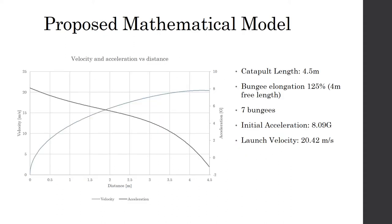The new proposed mathematical model which incorporates the estimated losses and using the parameters for which the catapult was designed, now predicts an initial acceleration of 8.09 G's and a final launch velocity of 20.42 meters per second. This indicates that there will be a favorable launch.